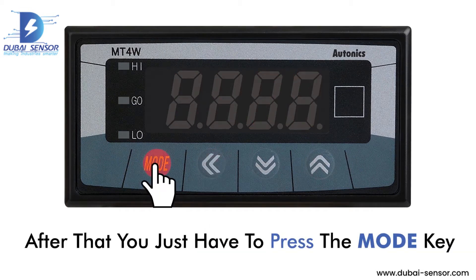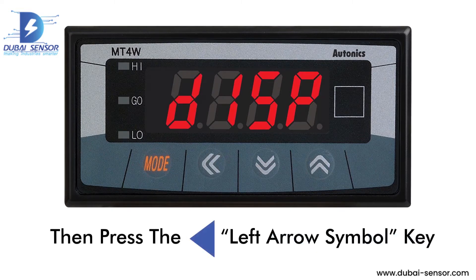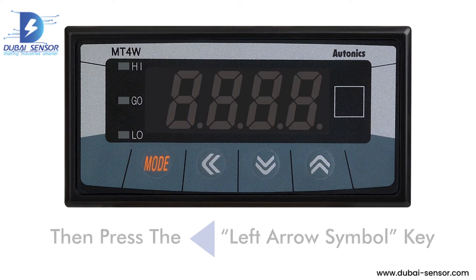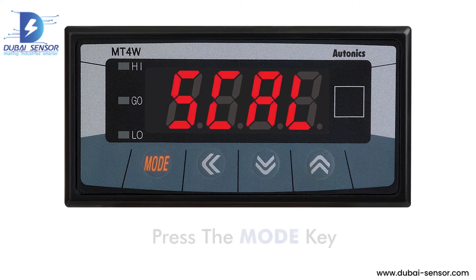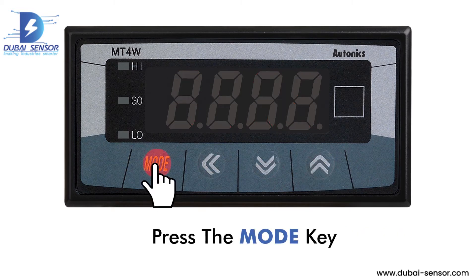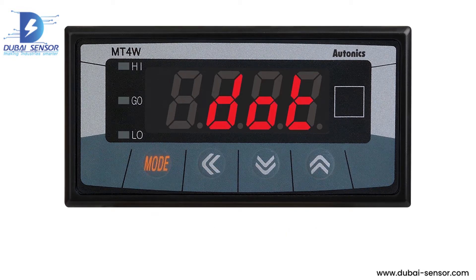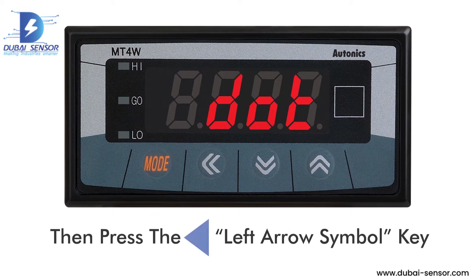After that, press the mode key. Then press the left arrow symbol key. Now press the key — the meter will show SCAL. Press the mode key. Then press the left arrow symbol key.